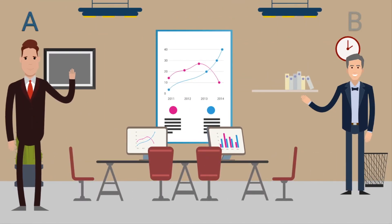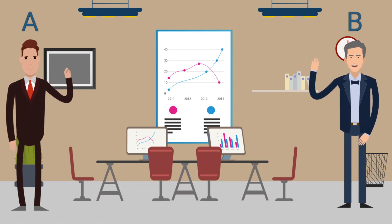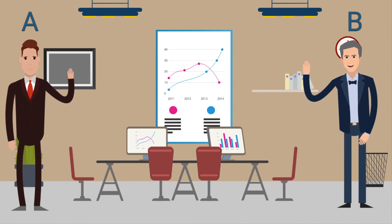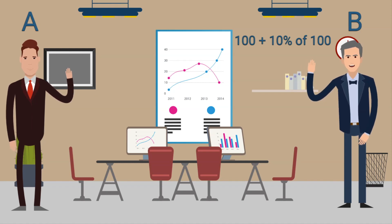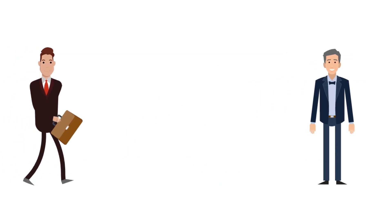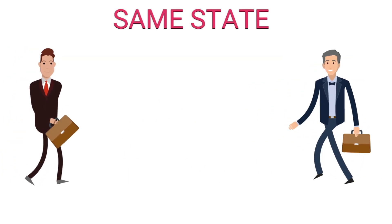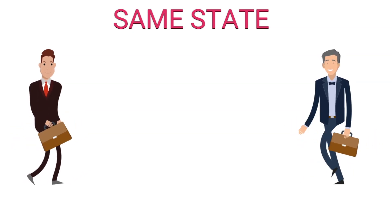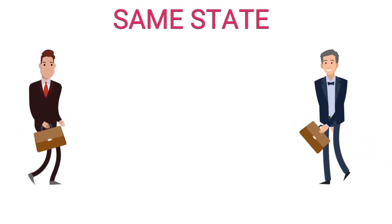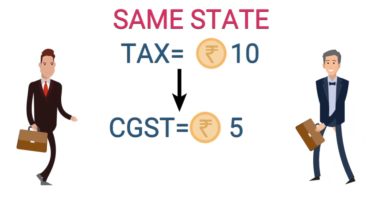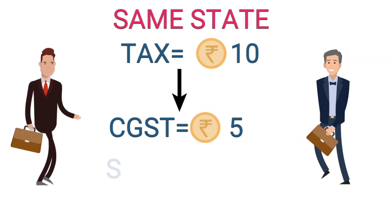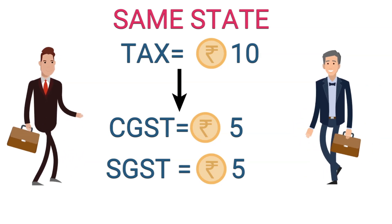For example, if A sells an article to B for Rs.100 and the rate of GST is 10%, then B will pay 10% of Rs.100 to A, which is Rs.10. So the price B pays is Rs.100 plus Rs.10, that is Rs.110. When both A and B are from the same state, the state government takes half the tax and the remaining half goes to the Central Government. That means from the tax of Rs.10, Rs.5 goes to the Central Government as CGST and Rs.5 goes to the State Government as SGST.